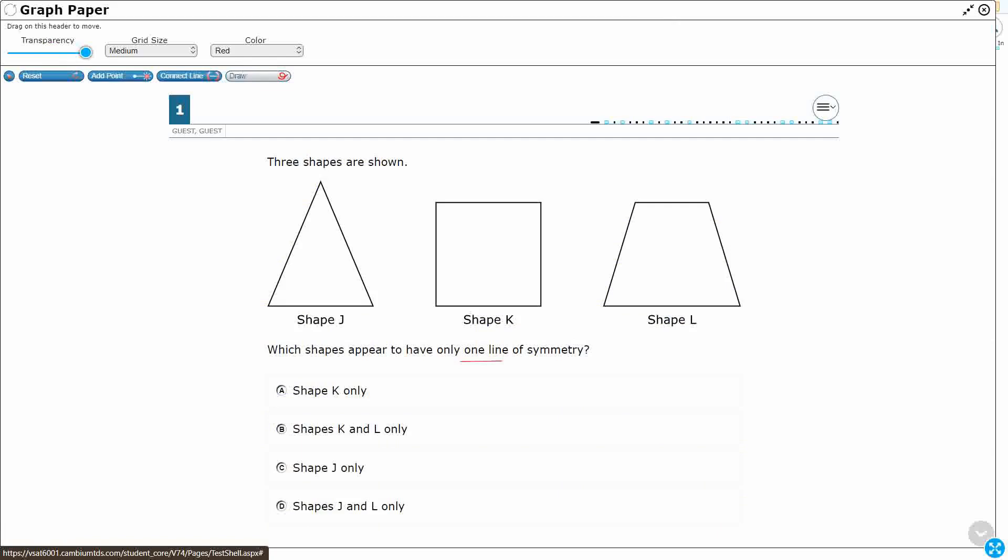At least one of these has to because none of these options are none of these. So only, that's the key, not at least, only one line of symmetry. Now, we need to know what that means.